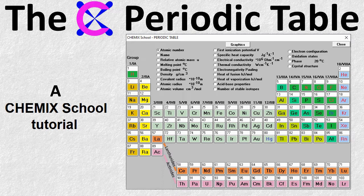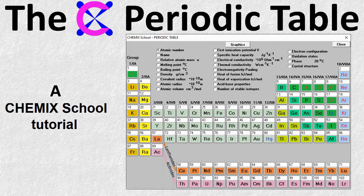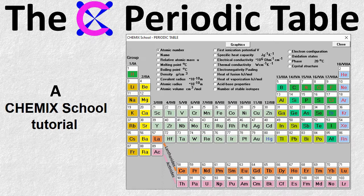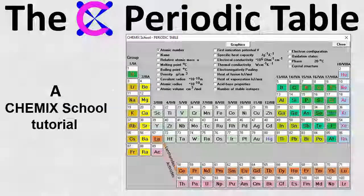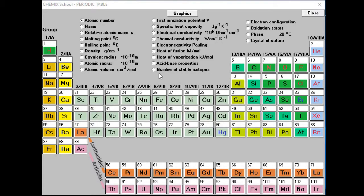The periodic table is a way to organize the elements in a table based on their physical and chemical similarities. The CHEMIX School periodic table has color-coded push buttons.